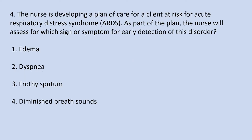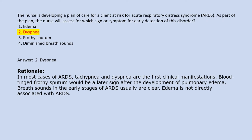The nurse is developing a plan of care for a client at risk for acute respiratory distress syndrome (ARDS). As part of the plan, the nurse will assess for which sign or symptom for early detection of this disorder? 1. Edema. 2. Dyspnea. 3. Frothy sputum. 4. Diminished breath sounds. Answer 2. Dyspnea. Rationale: In most cases of ARDS, tachypnea and dyspnea are the first clinical manifestations. Blood-tinged frothy sputum would be a later sign after development of pulmonary edema. Breath sounds in the early stages of ARDS are usually clear. Edema is not directly associated with ARDS.